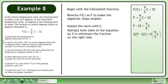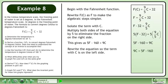Multiply both sides of the equation by 5 to eliminate the fraction on the right side. This gives us 5f minus 160 equals 9c. We write the equation so the term with c is on the left side.